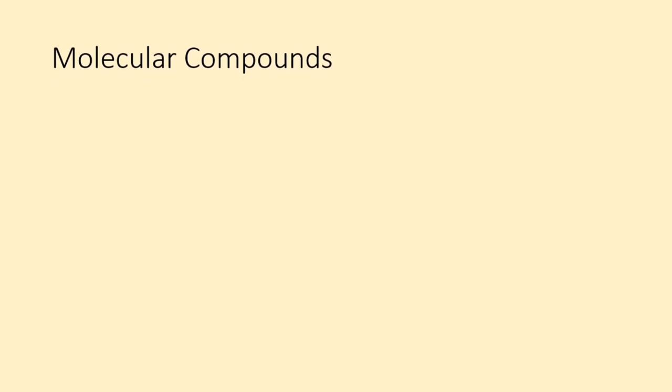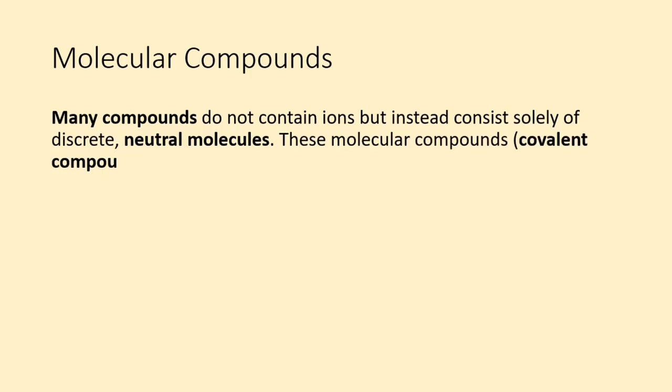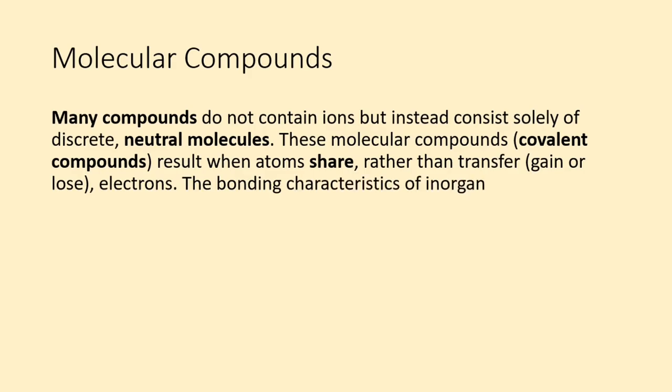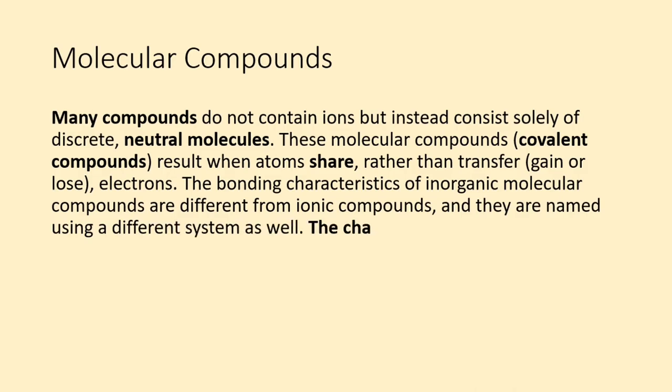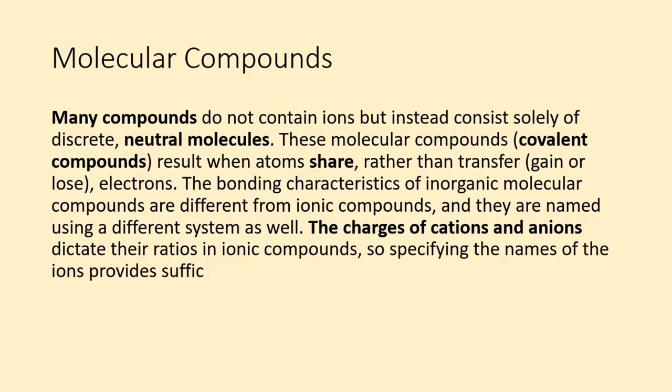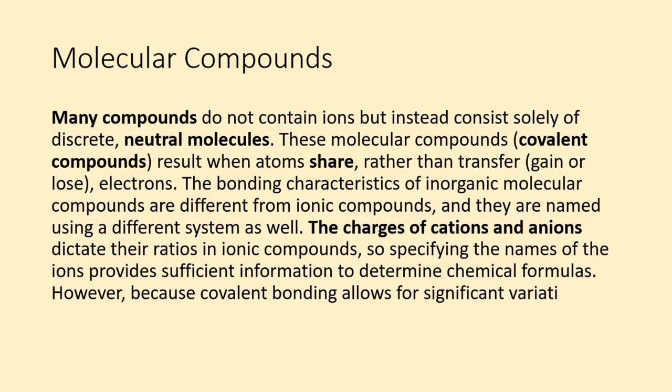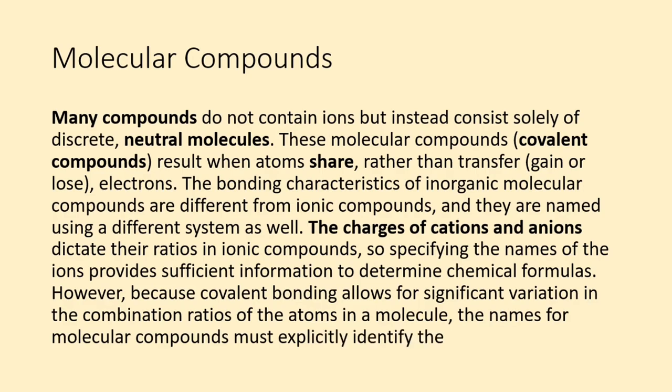Many compounds do not contain ions but instead consist solely of discrete, neutral molecules. These molecular compounds, covalent compounds, result when atoms share, rather than transfer (gain or lose), electrons. The bonding characteristics of inorganic molecular compounds are different from ionic compounds, and they are named using a different system as well. The charges of cations and anions dictate their ratios in ionic compounds, so specifying the names of the ions provides sufficient information to determine chemical formulas. However, because covalent bonding allows for significant variation in the combination ratios of the atoms in a molecule, the names for molecular compounds must explicitly identify these ratios.